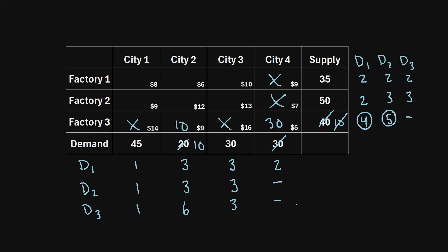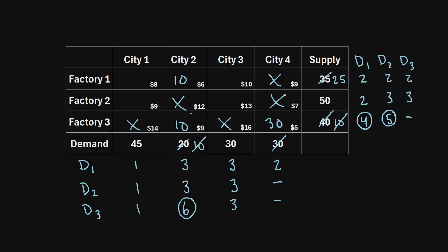The largest value in this third iteration of differences is six. We look at the column containing that six and identify the lowest shipping cost, which is six dollars. The remaining demand in that column is 10, and factory one has a supply of 35, so we can fulfill that demand. We put a 10 there, completely meeting city two's demand. Factory one's supply is reduced by 10, leaving 25. City two's column is crossed out.